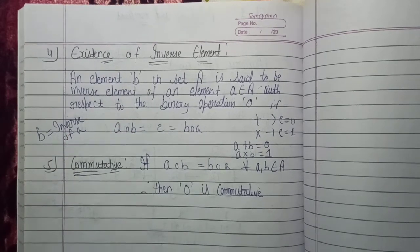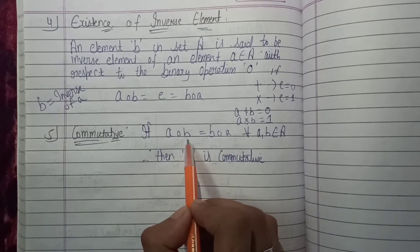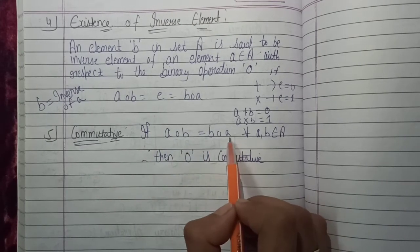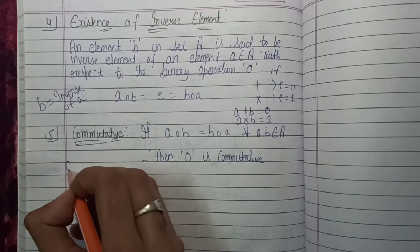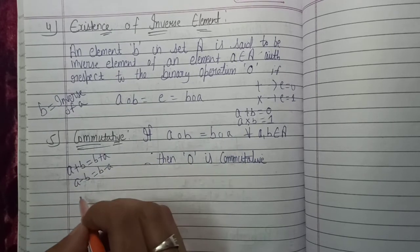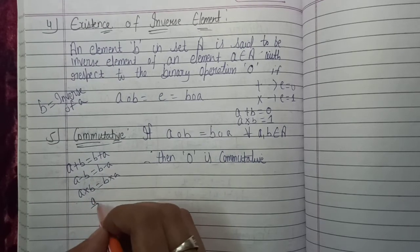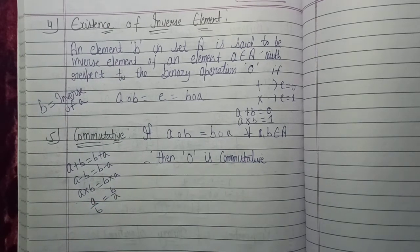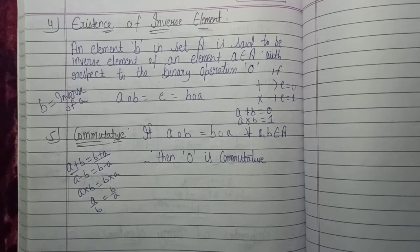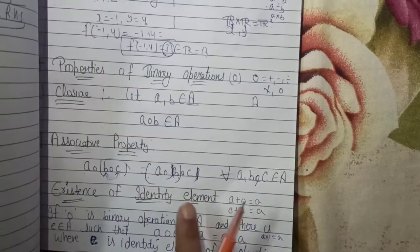Commutative property means swapping two elements: whether you do A operation B or B operation A, the result is the same. For addition: a plus b equals b plus a. For subtraction: a minus b may not equal b minus a. For multiplication: a times b equals b times a. If left and right sides are equal, the operation is commutative. These are the 5 properties: closure, associative, identity element, inverse, and commutative.